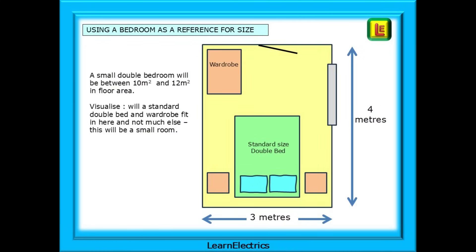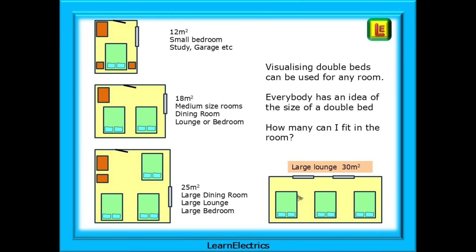I visualise a bedroom as a reference for size for any room that is having sockets installed. A small double bedroom will be between 10 and 12 square metres in floor area. Ask yourself: will a standard double bed and wardrobe fit in here and not much else? This will be a small room. If you want an accurate number, get out the tape measure, but this method works for a quick first impression. Visualising double beds can be used for any room — everybody has an idea of how big a double bed is. If you could comfortably fit just two beds and wardrobes in the room, then it's probably a medium-sized room.